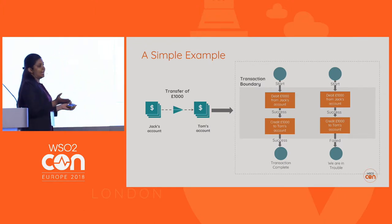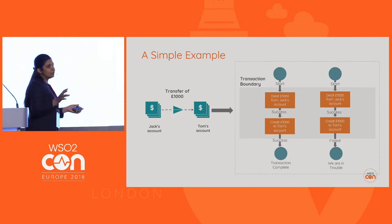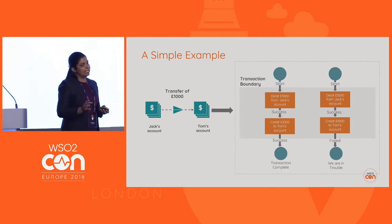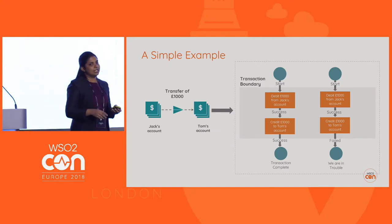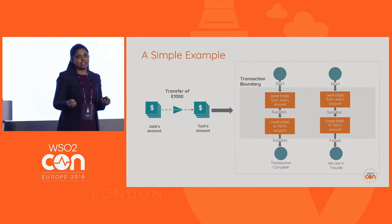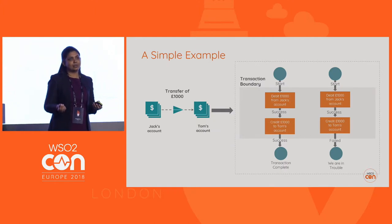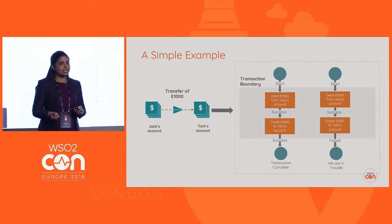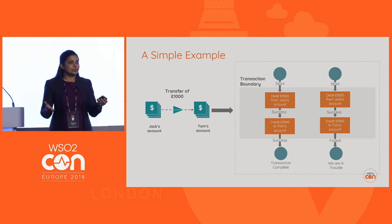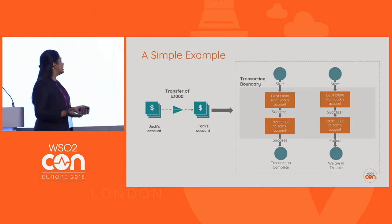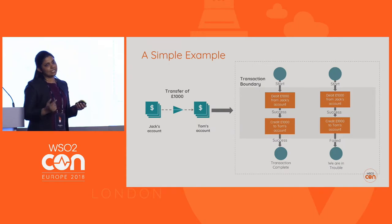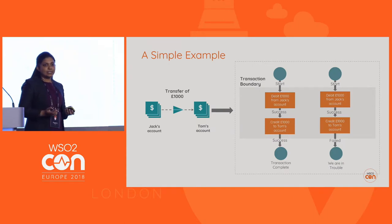On the other hand, if one of these operations fails, we need to revert all the other actions that we have performed, and we say the transaction has failed. This is where concepts like transactions, transaction boundaries, or XA data sources come into the picture.